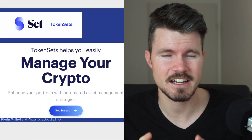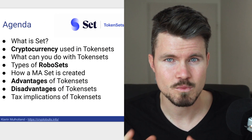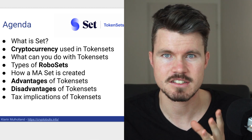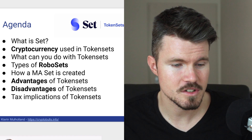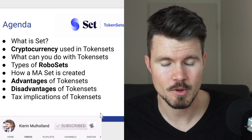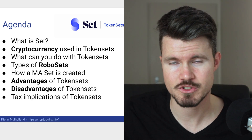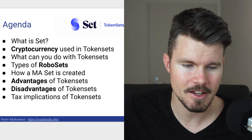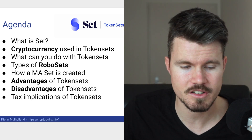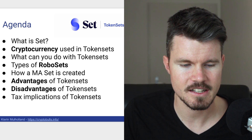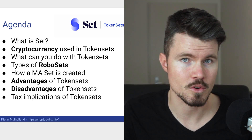I think it's a very exciting decentralized finance platform based on Ethereum. We will look at what it is, what are set tokens, what is Set, how does it work, which cryptocurrencies are used in Token Sets, what you can do with Token Sets, the different options, the types of robo sets, the types of trading strategies available to buy, how a moving average set is created, how it works, the advantages, the disadvantages, and the tax implications of Token Sets.